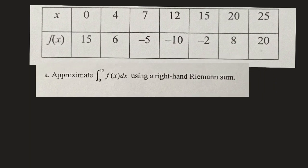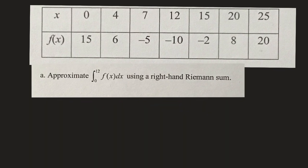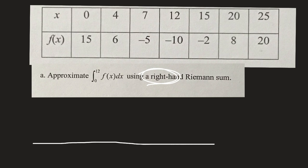To approximate from 0 to 12, it's helpful to make a number line and put our x-values on it. We have x = 0, x = 4, x = 7, and x = 12. These are our four x-values in that interval. Using the right-hand sum means we start at x = 12. The y-value at x = 12 is negative 10, so we go down 10 units.